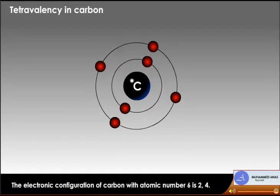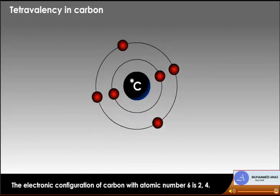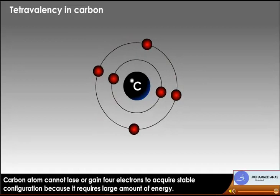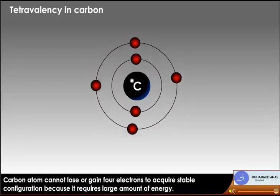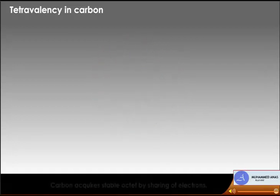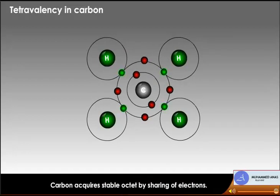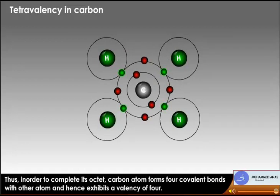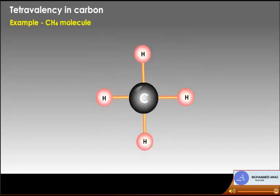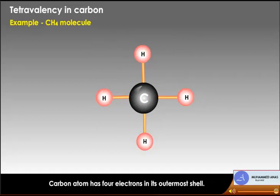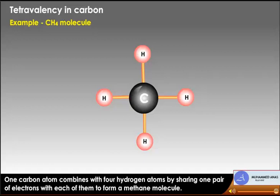The electronic configuration of carbon with atomic number 6 is 2, 4. Carbon cannot lose or gain four electrons to acquire a stable configuration because it requires a large amount of energy. Carbon acquires a stable octet by sharing of electrons. In order to complete its octet, the carbon atom forms four covalent bonds and hence exhibits a valency of four. For example, in a methane molecule, one carbon atom combines with four hydrogen atoms by sharing one pair of electrons with each.